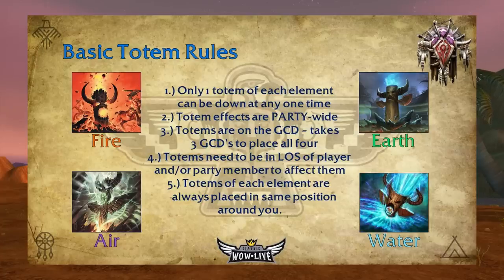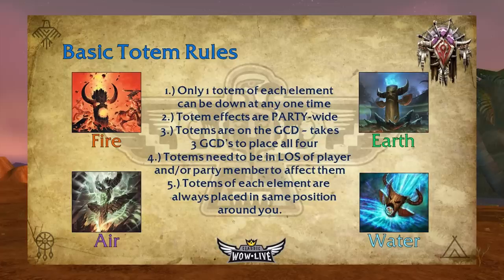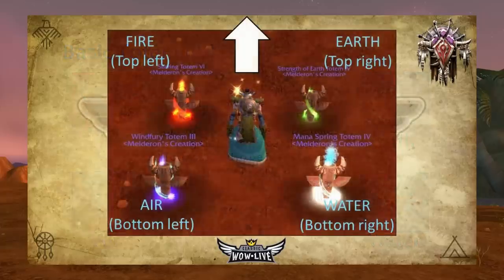A lot of time and effort goes into strategizing where shamans go in which groups by horde raid leaders, so keep that in mind. Totems are on the global cooldown — it will take a total of three global cooldowns to place all four of your totems. Totems need to be in line of sight of the player or party member they will be affecting. If you're behind a wall, the totem cannot provide you the benefit.